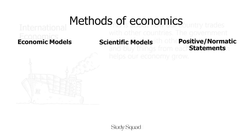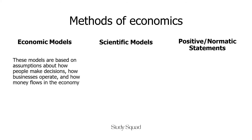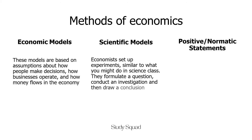There are three main methods we use to understand and study economic issues: economic models, the scientific method, and positive and normative statements. First up, we have economic models. Think of this like making maps for a treasure hunt. Economists use models to predict how people will behave and how different events might affect the economy. These models are based on assumptions about how people make decisions, how businesses operate, and how money flows in the economy. For example, economists might create a model to predict what might happen to prices if the government raises taxes on something like petrol.